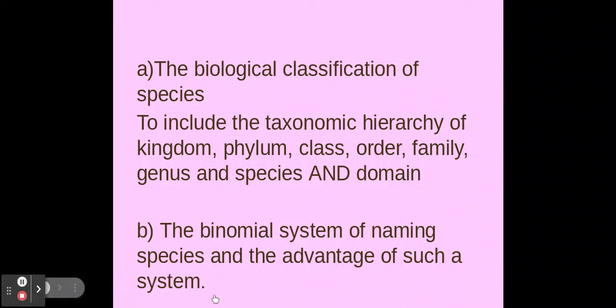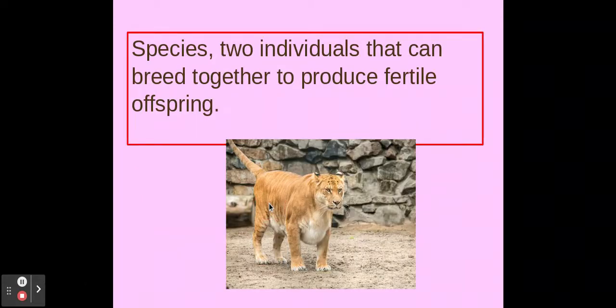Welcome biologists to this spec point A and B on classification and evolution. These are quite quick spec points and some you might have met at GCSE as well. The first one here is looking at taxonomic hierarchy, but before we do that we need to know what a species is. A species is where two individuals can breed together to produce fertile offspring.